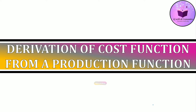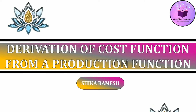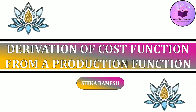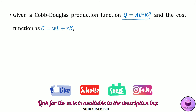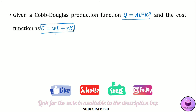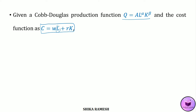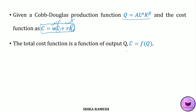Hello friends. In today's video we shall see the mathematical derivation of a cost function from a production function. We have a Cobb-Douglas production function: q = A·L^α·K^β. The cost function is given as C = wL + rK, where L is the number of laborers, K is the number of capital units, w is the wages given to laborers, and r is the rental price of capital. The total cost function is given as a function of output, i.e., C is a function of q.